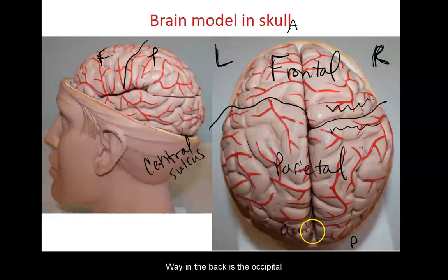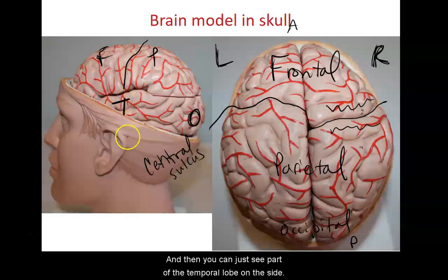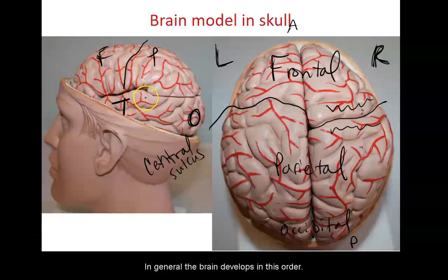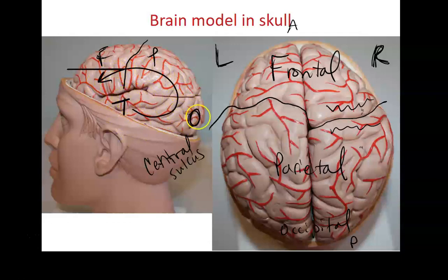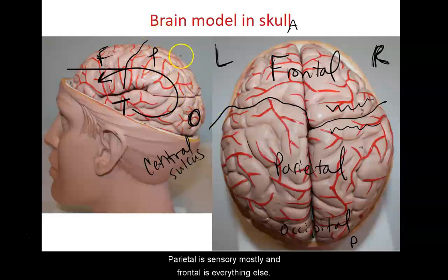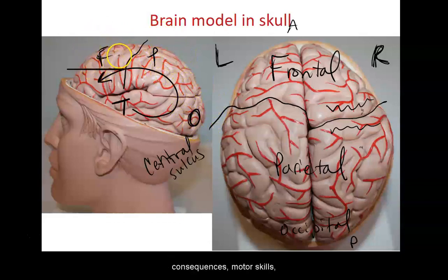Way in the back is the occipital lobe, and on the side you can just see part of the temporal lobe. In general the brain develops back to front. Temporal is for auditory and memories; occipital is for optics or vision; parietal is mostly sensory; and frontal is everything else — problem solving, consequences, motor skills, and emotional control.